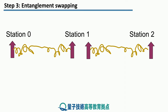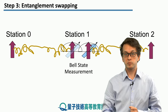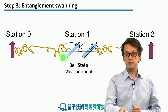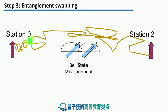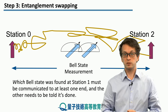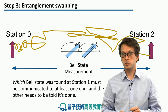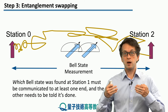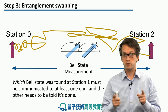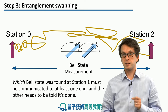Going back to our visual aid: we started with two maximally entangled pairs between station 0 and station 1, and between station 2 and station 1. We then performed a Bell state measurement on the qubits held by station 1, resulting in entanglement being established between the end-to-end nodes, station 0 and station 2. Station 1 also needs to inform station 0 and station 2 of the measurement outcomes — it only needs to send the result to one, but both stations need to be notified that the procedure was carried out successfully. This introduces a time delay, as station 0 and station 2 must be notified classically that the Bell state measurement has taken place.